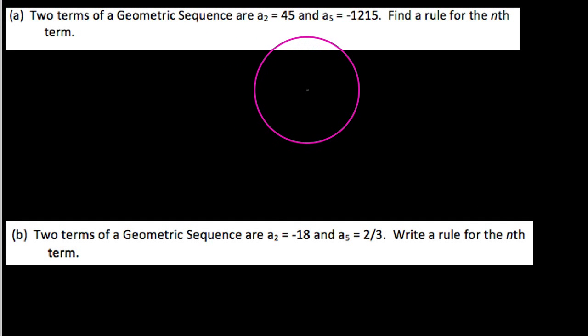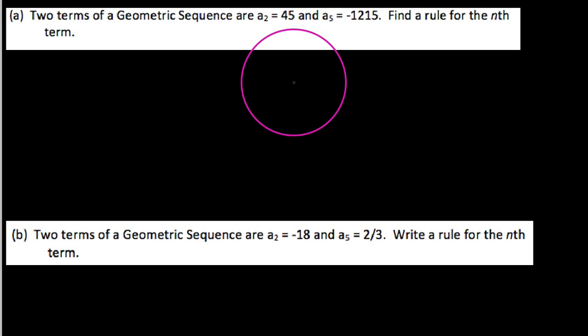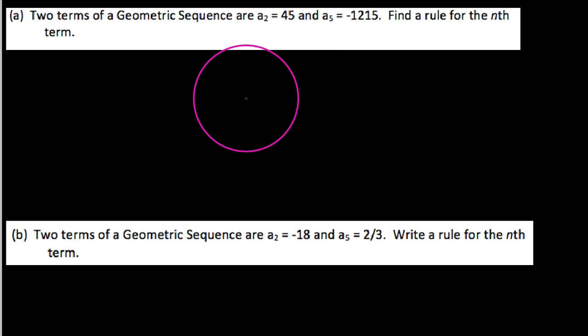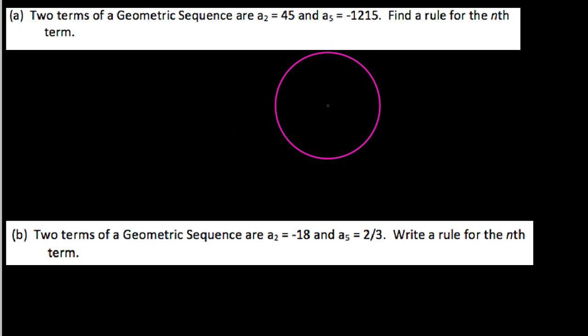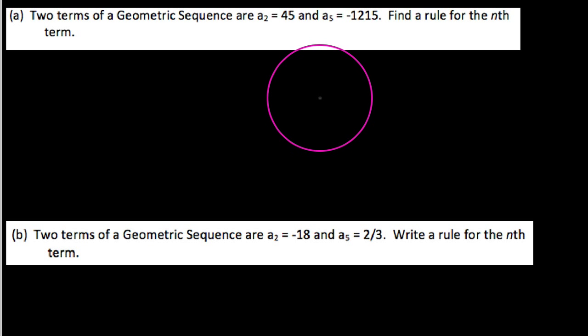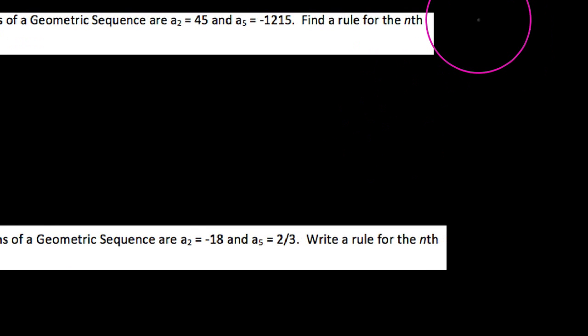This is my third video in my module on geometric sequences, in which we're going to practice how to write the rule for the nth term of a sequence, but when you neither know the first term nor the common ratio.